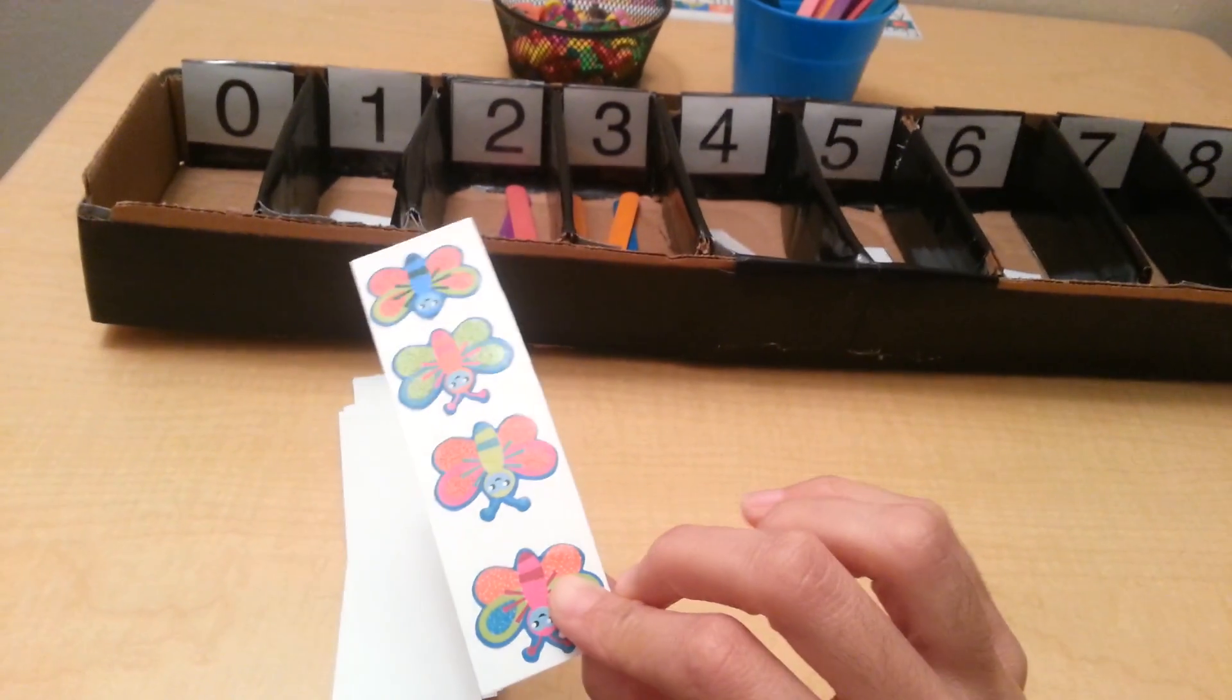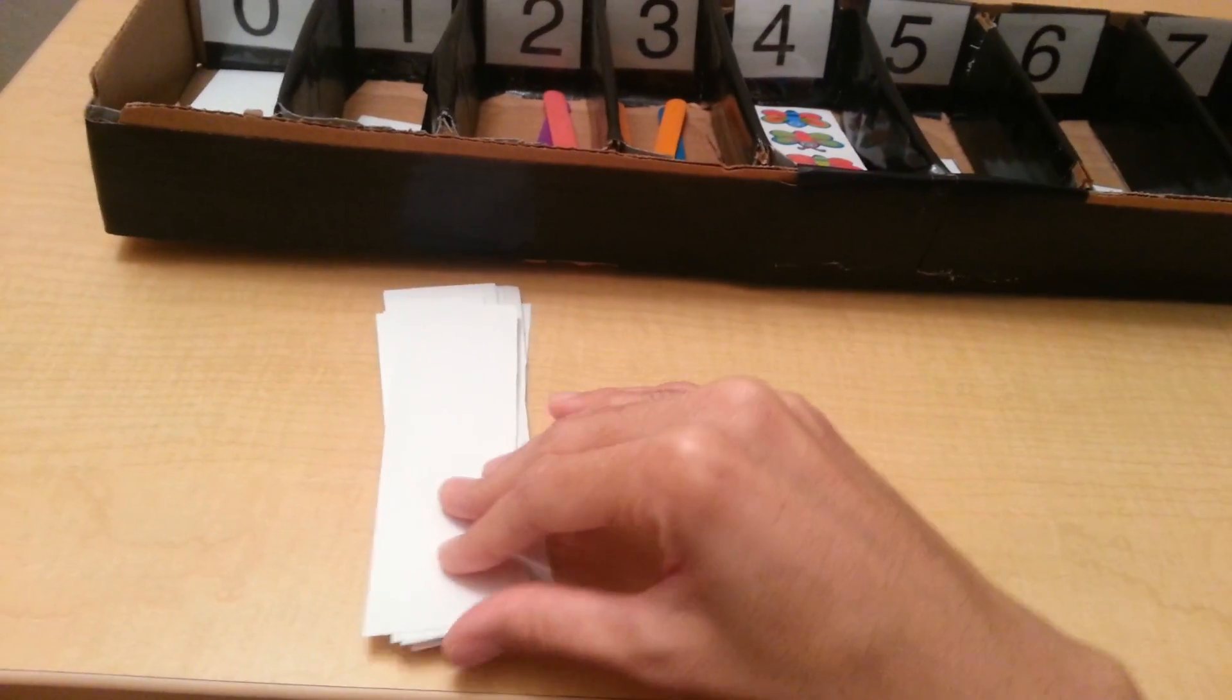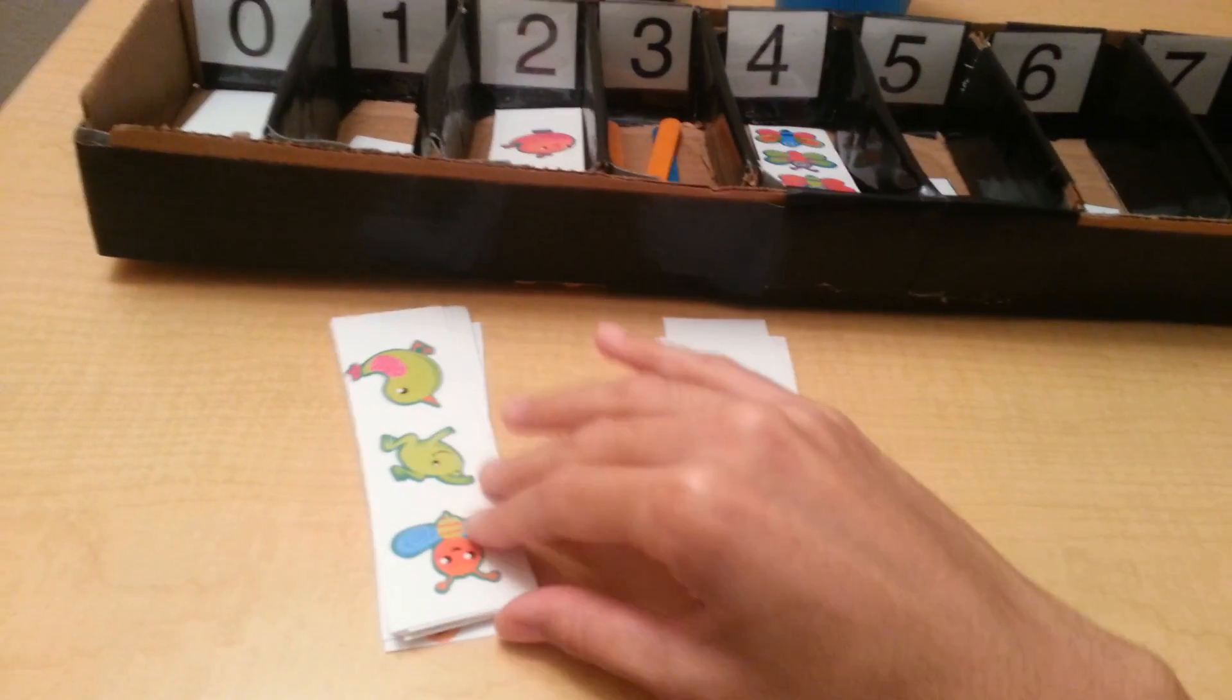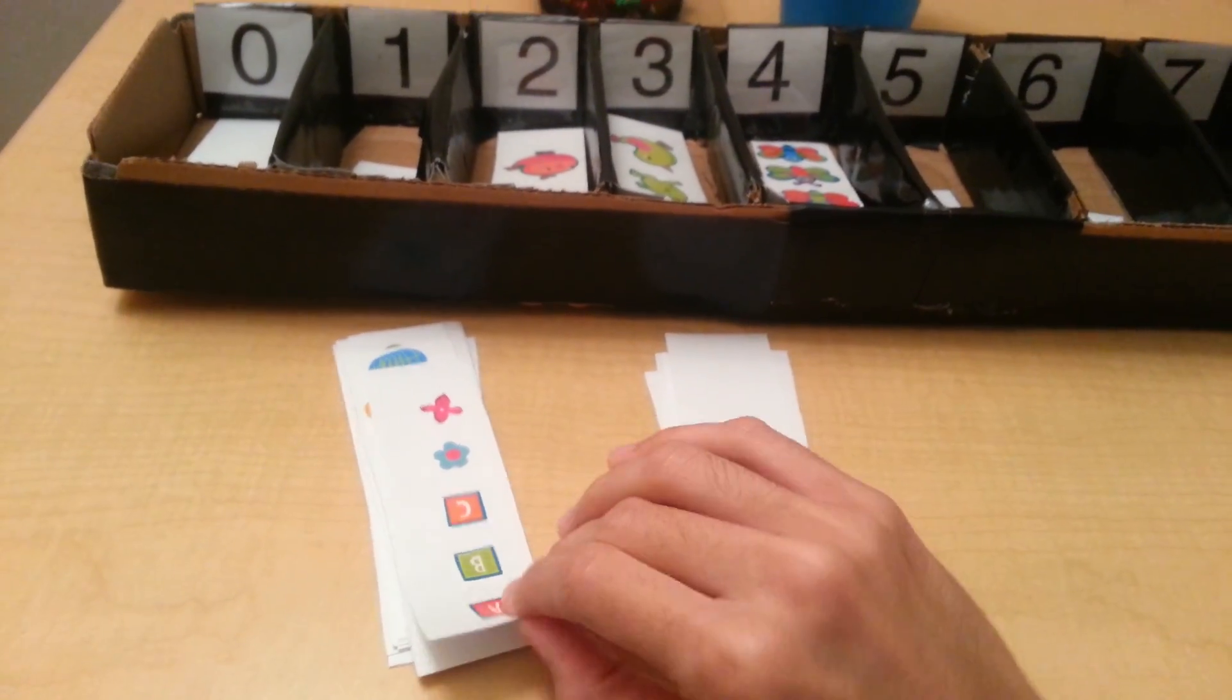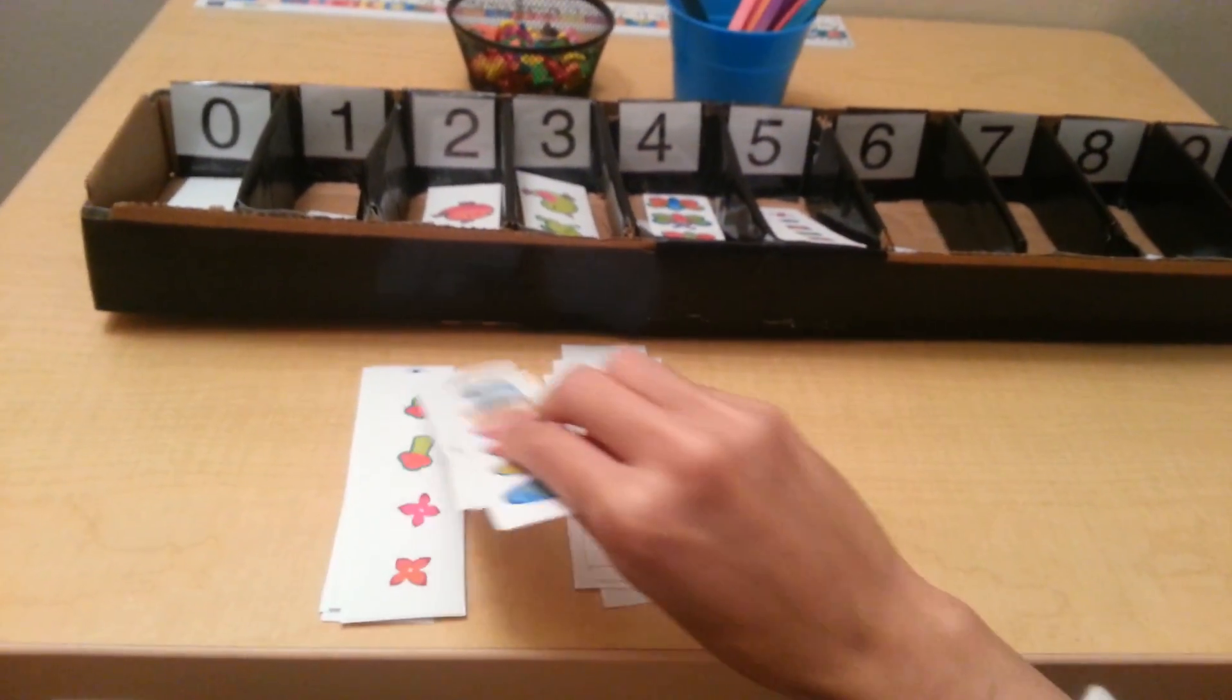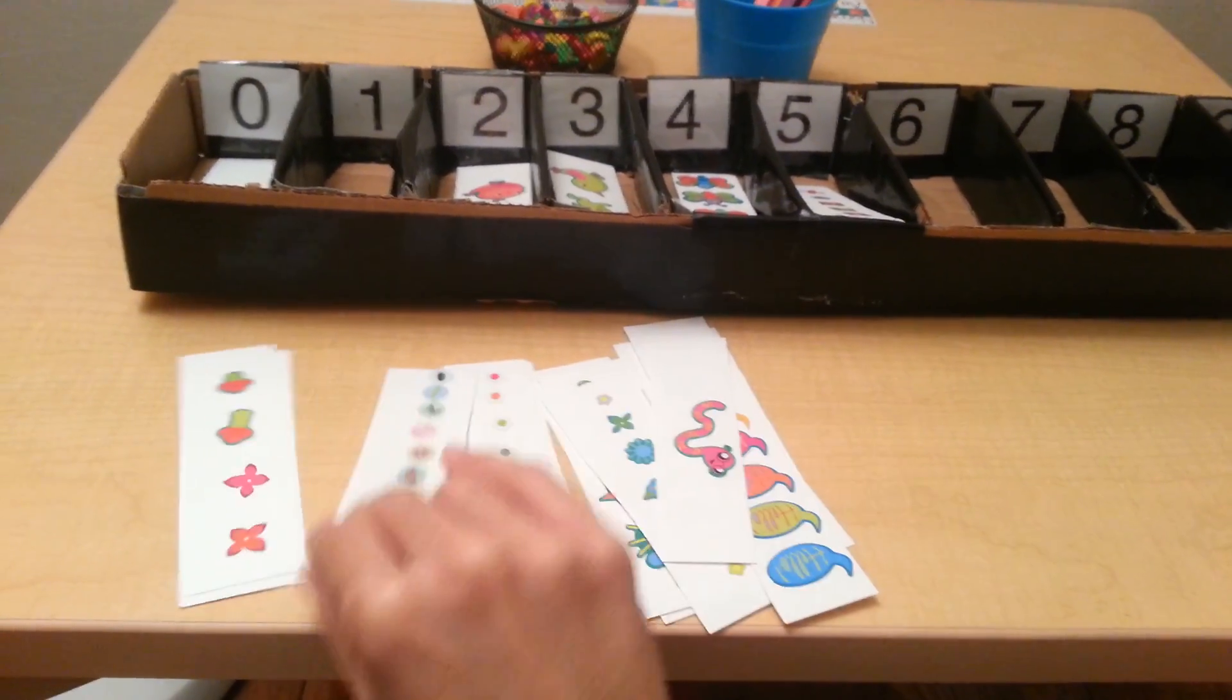So then the child sorts these cards into these slots. This is four. Zero. Oh, there's a lot of zeros here. Two, three, five, and so on. And you can create a lot of these different cards to represent the quantities.